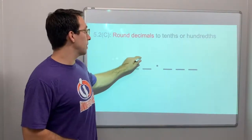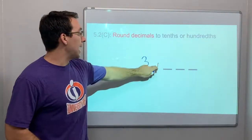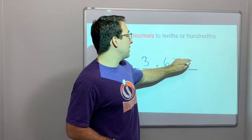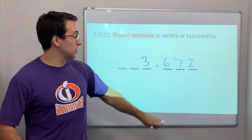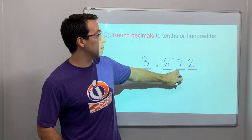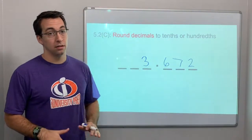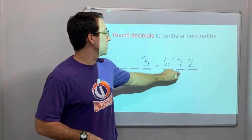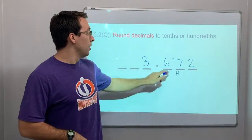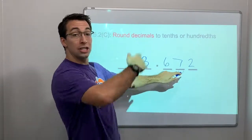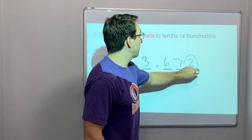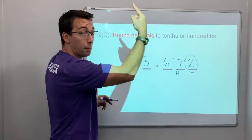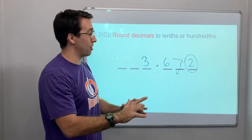Okay, so let's say we have 3 and 672 thousandths, because we have our tenths place, our hundredths place, our thousandths. The whole objective of rounding a decimal is, say we're going to round to the hundredths place, so this is the hundredths place, right? We need to look to the decimal to the right, so we're going to have to look at the 2. Does the 2 make the 7 go up or stay the same, right?